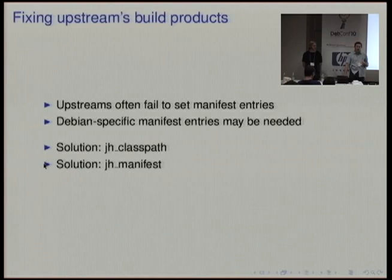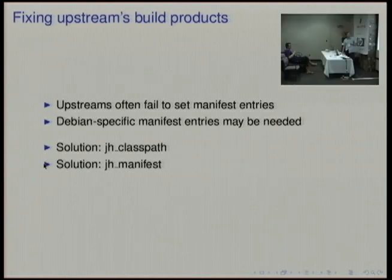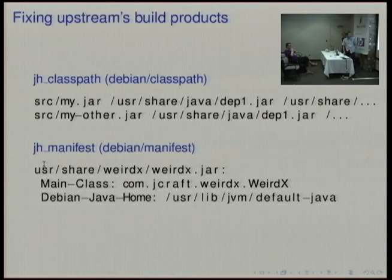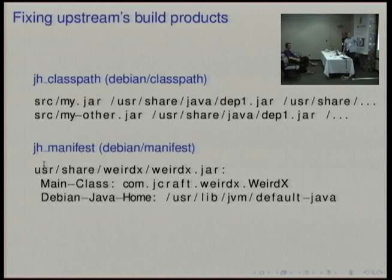To make this easier, there are a couple of tools. The simplest one is jh_classpath, where you basically just have a Debian classpath file where you list a path to a jar and a list of jars it depends on, and it will update the classpath entry for you. In more complicated cases, maybe you need to set the main class because the jar is going to be executed with java -jar. You can use debian/manifest where you basically embed a manifest entry for each jar. You can invoke these without any arguments and if there is a debian/manifest or classpath file, it will pick those up — perfect for the normal deb helper style.